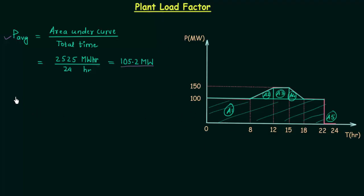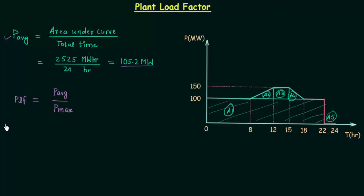Plant load factor, we represent by PLF, which is simply the abbreviation of plant load factor. It is equal to average power over the maximum power. So the ratio of average power to the maximum power is known as PLF. Using this formula you can easily calculate the plant load factor.